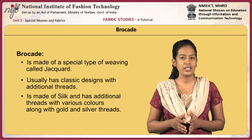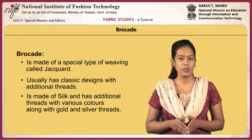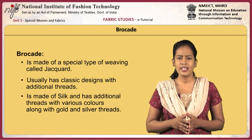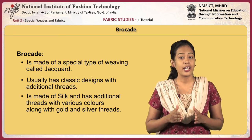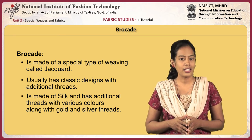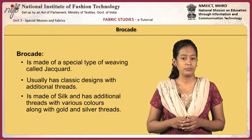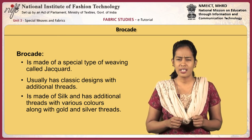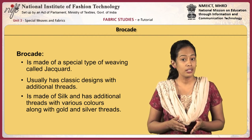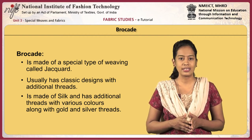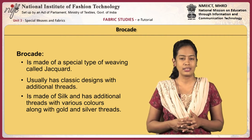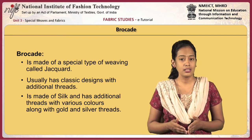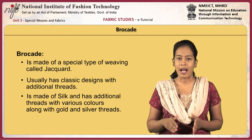Brocade is a luxurious jacquard woven fabric with rich heritage. It usually has classic designs with additional threads, and hence may also be classified as extra yarn weave. Jacquard designs are intricate and complicated and are made using a special attachment in the loom. It is made of silk and has additional threads with various colors, along with gold and silver threads. The extra yarns make satin or twill floats on any weave background.